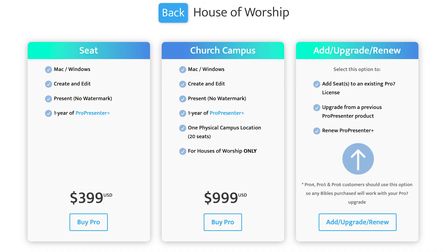Churches only have the option to purchase the campus license, which gives them 20 seats — so main service, youth ministry, children's ministry, anywhere in the building. If your church has multiple campuses across the city, then you're going to need multiple single-seat licenses or multiple campus licenses, depending on how many computers you need at each location.